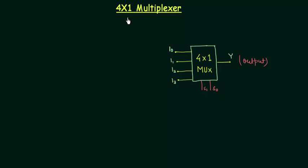As the name suggests it is having 4 inputs and of course multiplexers are always having 1 output. So I can write n is equal to 4 where n is the number of inputs to the multiplexer.